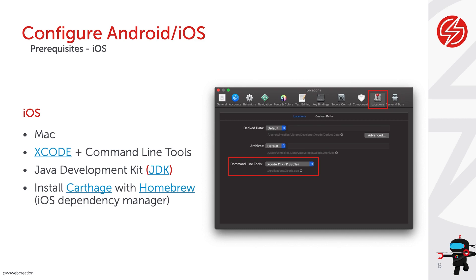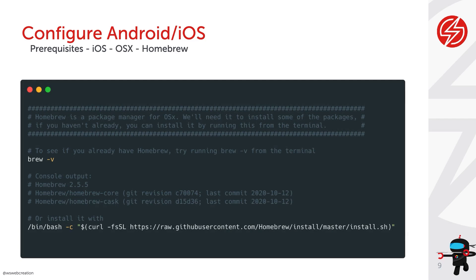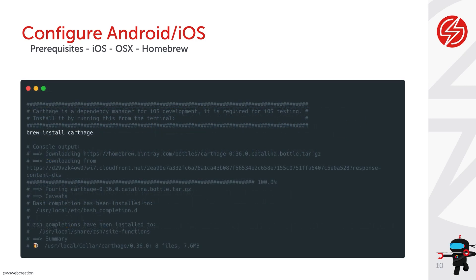For iOS we also need to install Carthage, which is an iOS dependency manager, and we use Homebrew for that — Homebrew is an OSX dependency manager. To verify if Homebrew is installed, run 'brew -v' and it will give you a console output. If you don't have it, install it with the provided command. Once done, install Carthage with Homebrew. You'll get an output and in the end you'll get a beer — it's digital, but that's how Homebrew works. Carthage is now successfully installed on your machine.